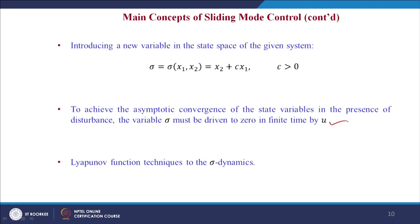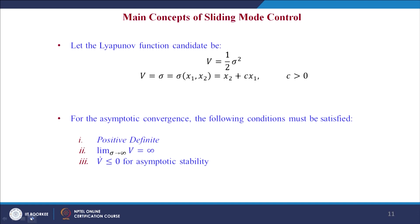We have to decide which control law — the sliding mode control law — drives the system states to asymptotic stability by driving sigma to finite time convergence. Applying Lyapunov function techniques to the sigma dynamics, let the Lyapunov function candidate be V = ½σ².